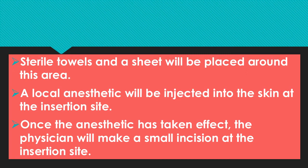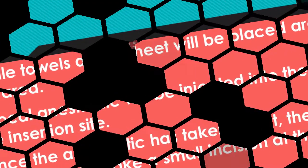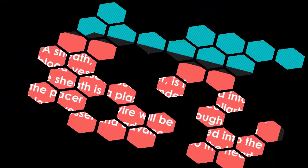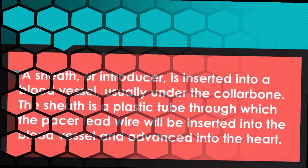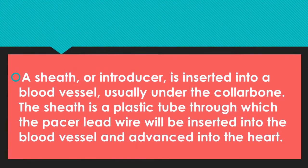The incision area will be covered with sterile towels and a sheet. A local anesthetic will be injected into the skin at the insertion site, and we must confirm the anesthetic effect. The physician will make an incision at the insertion site. A sheath or introducer is inserted into the blood vessel, usually under the collarbone. The sheath is a plastic tube through which the pacemaker lead wire will be inserted into the blood vessel and advanced into the heart.